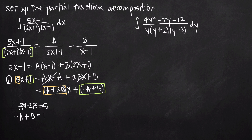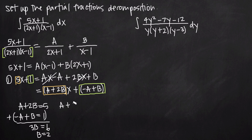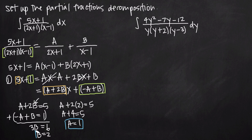We set a plus 2b equal to 5 and negative a plus b equal to 1. This is fairly easy because we have an a and a negative a, so adding the equations together the a's cancel. We get 3b equals 6, so b equals 2. Plugging b equals 2 back into the first equation: a plus 4 equals 5, so a equals 1. We've solved for our constants A and B.